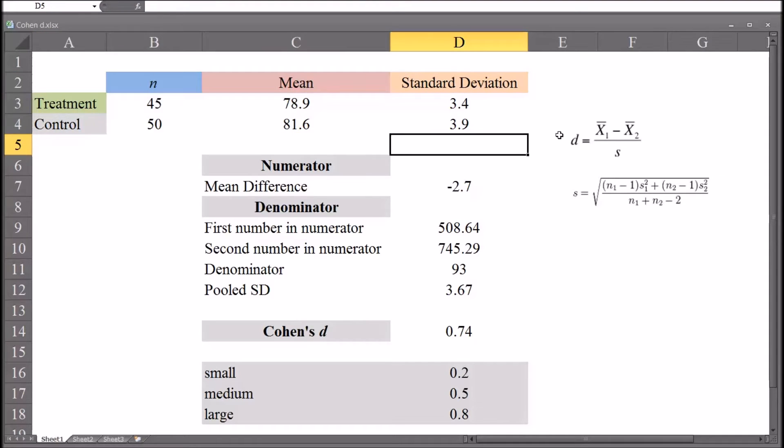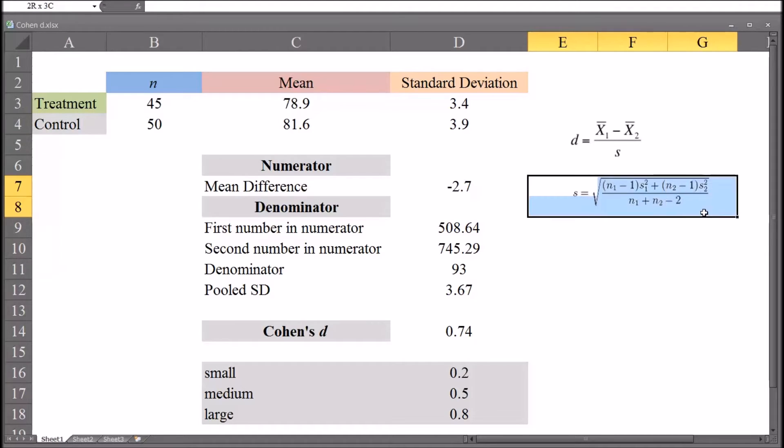Let's take a look at the formula over here to the right for Cohen's d. Cohen's d is equal to the mean difference divided by what's called the pooled standard deviation. And the formula for the pooled standard deviation is down here.